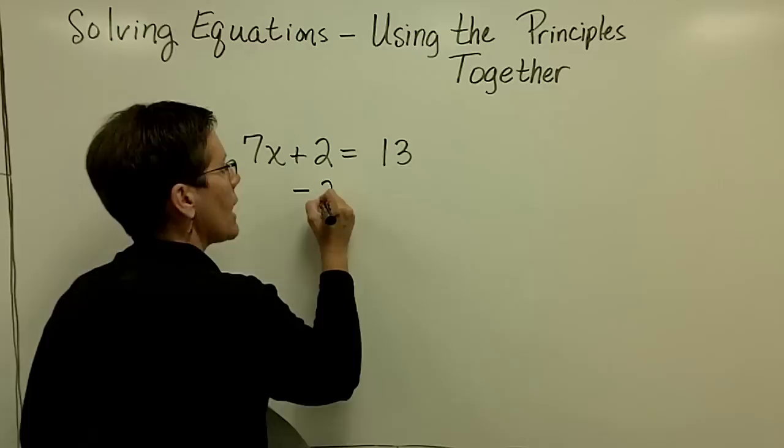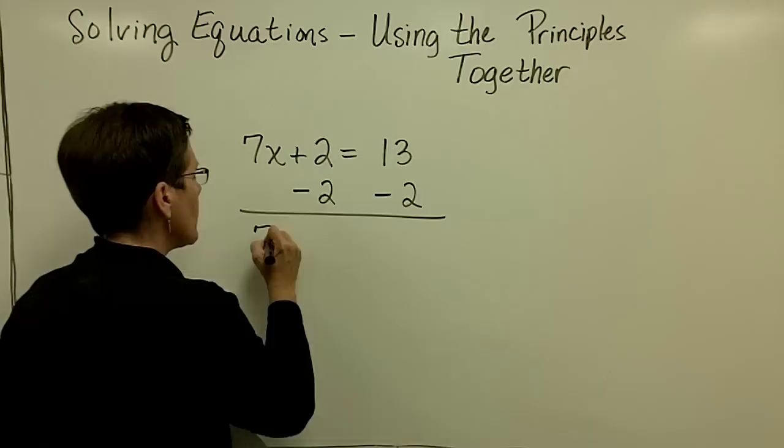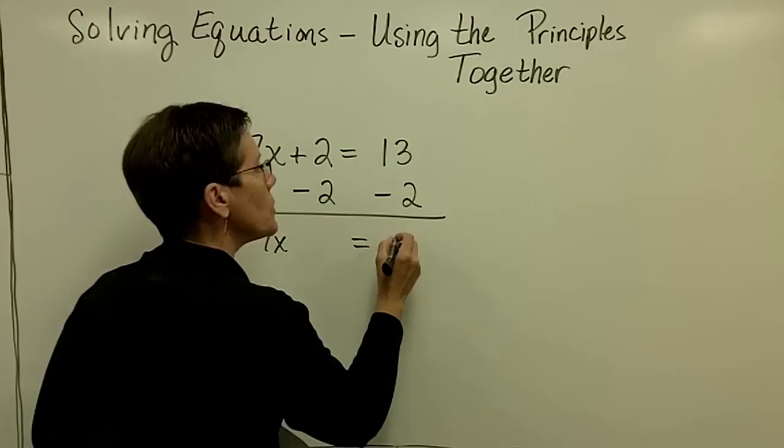I'm trying to isolate the variable. I work in a vertical approach, so I'm going to subtract 2 from both sides of the equation. The 7x will be all alone, and 13 minus 2 is 11.